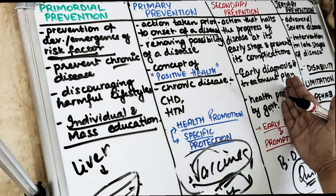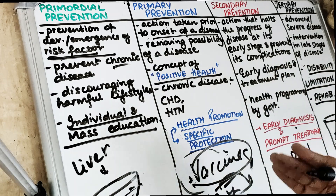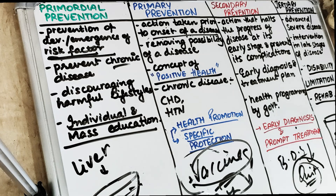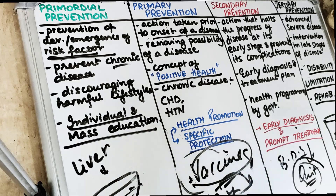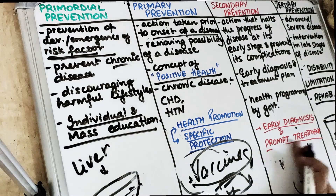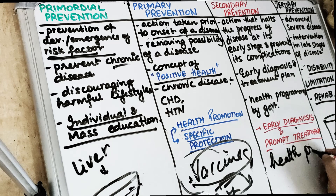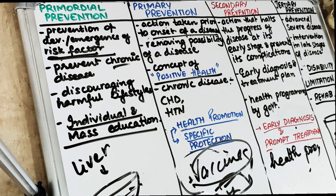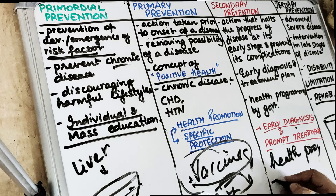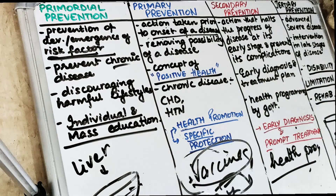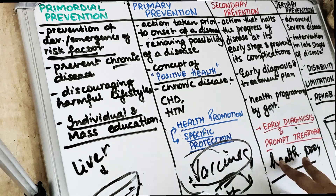We are now just stopping the disease from progressing to greater severity. All the health programs initiated by the government usually fall at the level of secondary prevention. The society has started drinking and smoking, and we don't want it to progress to severity. The secondary level of prevention constitutes early diagnosis and prompt treatment.